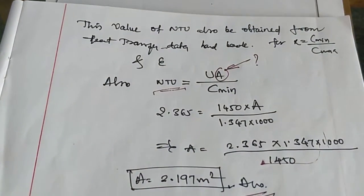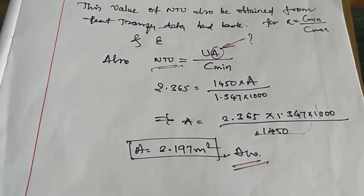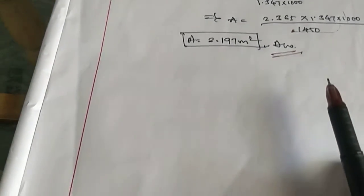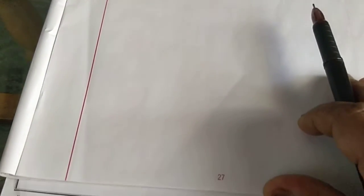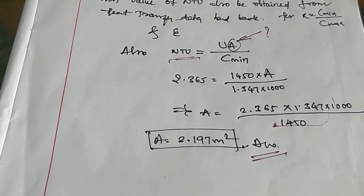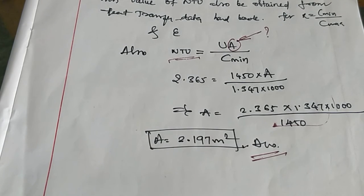I hope all students understood this problem and how to use the data handbook to get the NTU value as well as the R value. This kind of problem may also be asked in the university examination. Thank you.